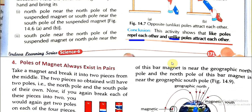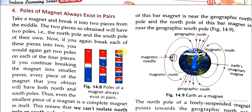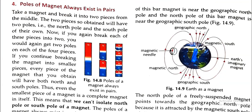Now take a magnet and break it into two pieces from the middle. The two pieces obtained will each have two poles — that is, a north pole and a south pole of their own. So here we have to say that a magnet always exists with two poles.